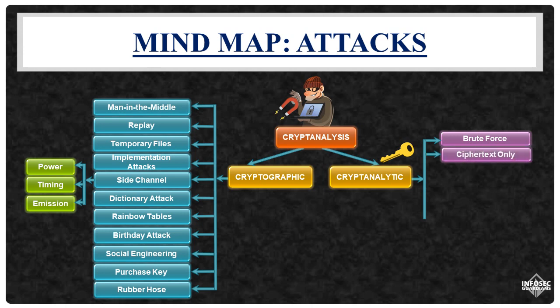In ciphertext-only attacks, the attacker only has access to the ciphertext and must deduce the key from it. Ciphertext-only attacks are highly challenging. Known plain text attacks occur when the attacker possesses both the ciphertext and the corresponding plain text. Given this scenario, the attacker aims to deduce the encryption key. Once the key is deciphered, they can decrypt other messages and potentially forge messages.